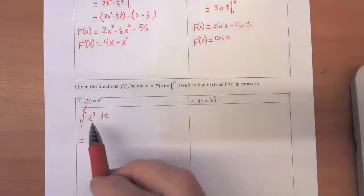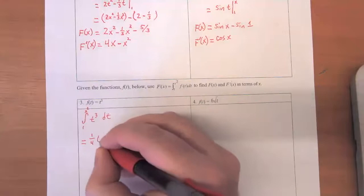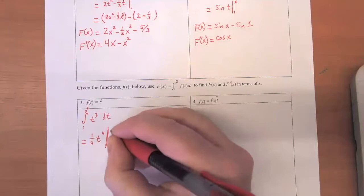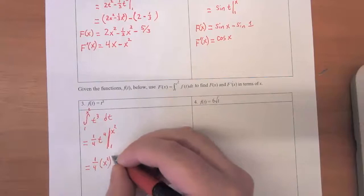So we're going to start out with the antiderivative of t cubed, which is one quarter times t to the fourth. We're going to evaluate that from one through x squared. And that is equal to one quarter times x squared to the fourth